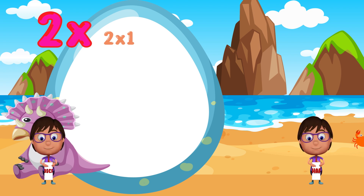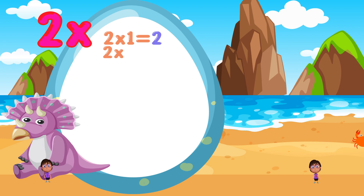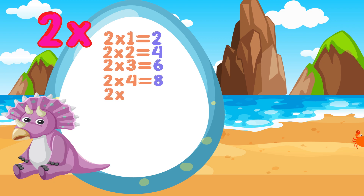2 times 1 is equal to 2. 2 times 2 is equal to 4. 2 times 3 is equal to 6. 2 times 4 is equal to 8. 2 times 5 is equal to 10.